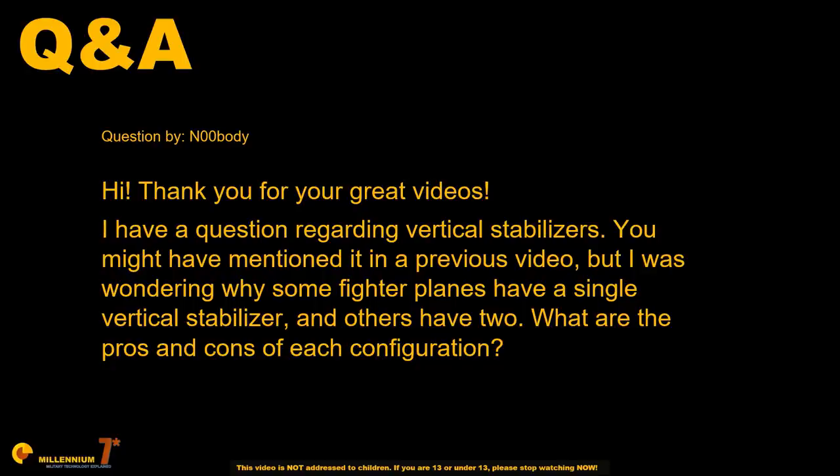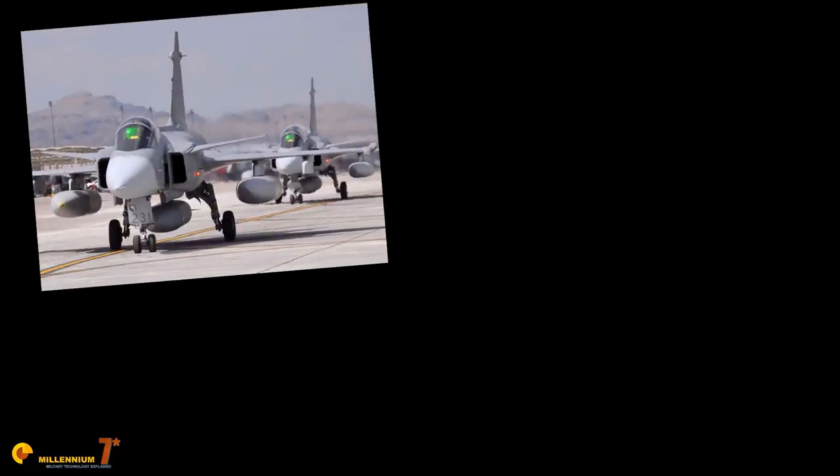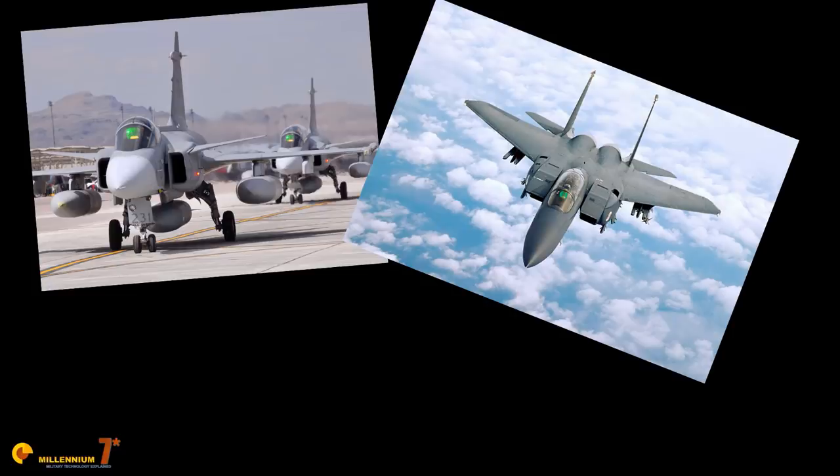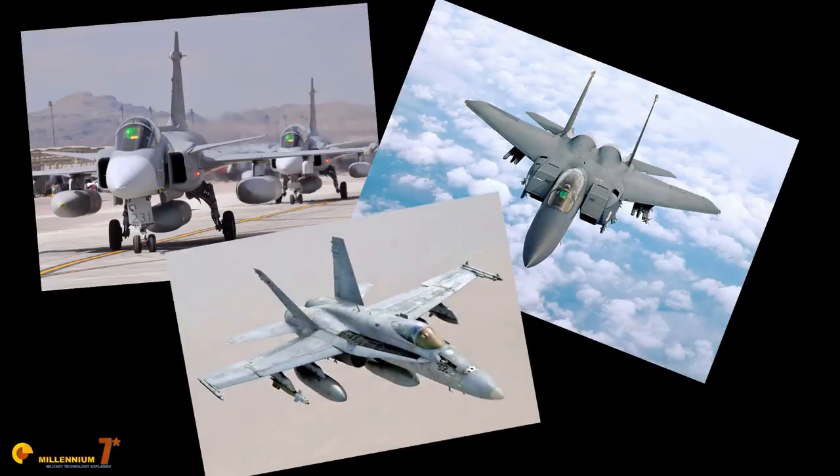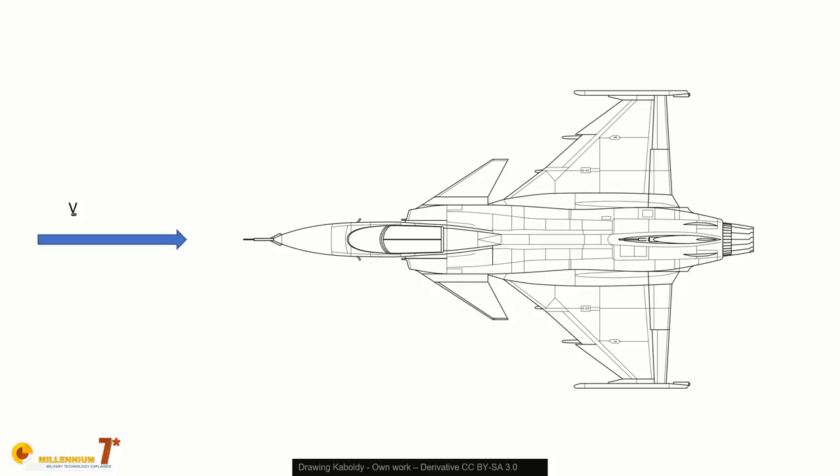That's a very good question. So one single vertical stabilizer, two vertical stabilizers, two canted stabilizers - there are three different design solutions. Let's try to see some considerations on why they're used and the reasons behind this. First, let's try to understand why there is a vertical stabilizer.